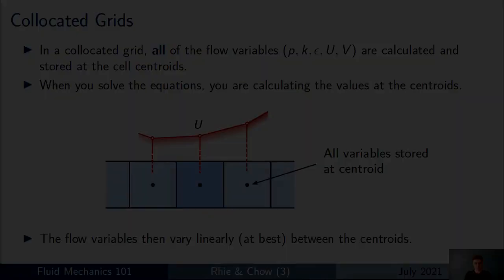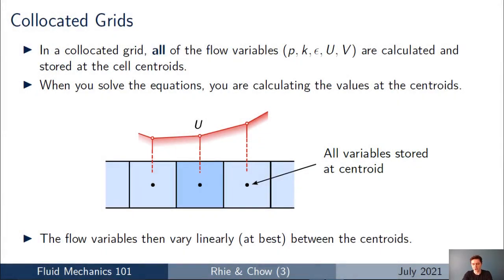This is going to be a great talk — let's get into it. In part two of this lecture series we were talking about staggered grids, and in part three the focus is going to be on co-located grids, which are used by the majority of mainstream CFD codes like OpenFOAM, ANSYS Fluent, and Star-CCM.